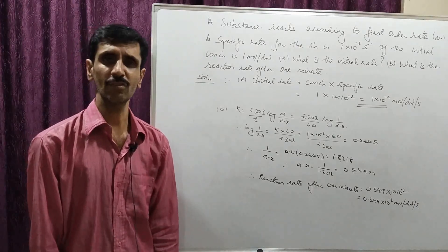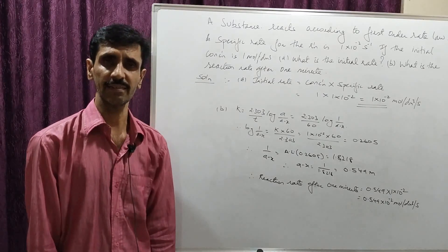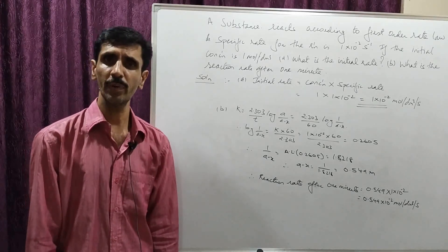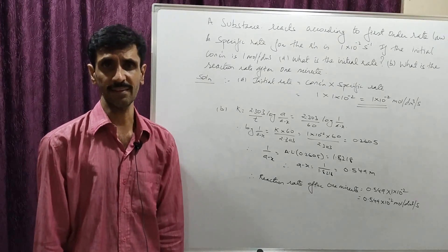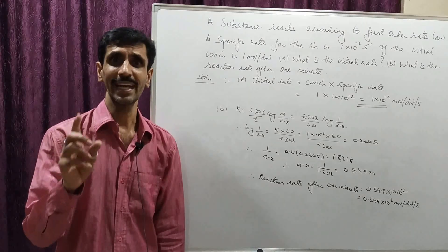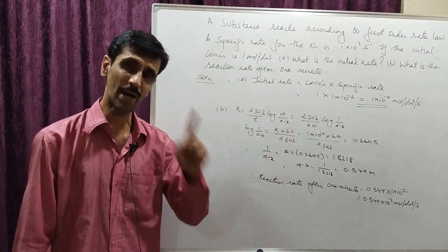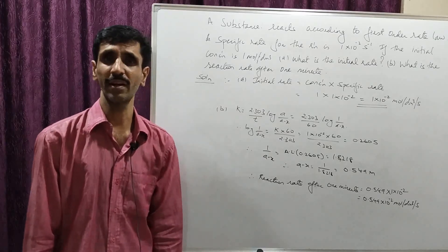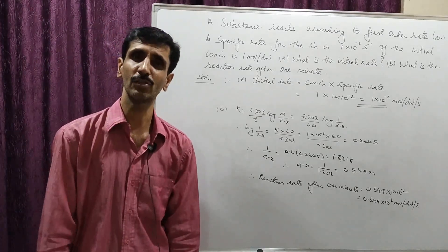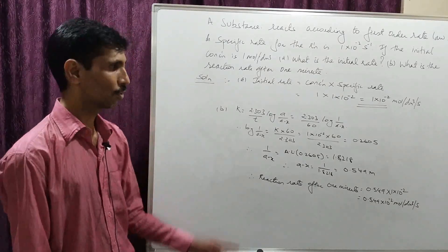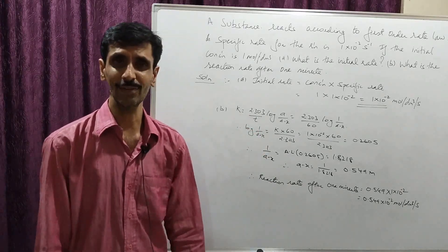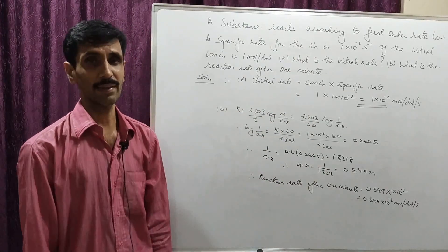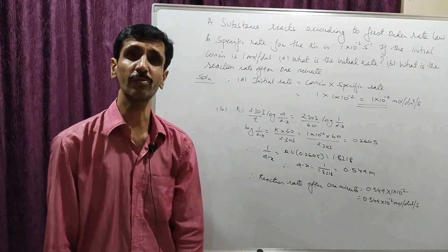For the second part, we calculate the rate of the reaction after 60 seconds, that is 1 minute. The integrated rate law equation for the first order is k = 2.303/t × log(a / (a−x)). So we have log(1 / (a−x)), where a is 1. Rearranging: log(1 / (a−x)) = k × 60 / 2.303. The value of k is 1×10⁻².